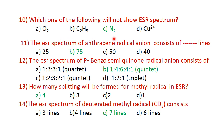The ESR spectra of anthracene radical anion consists of 75 lines. For the para-benzosemiquinone radical anion, the neighboring nuclei is 4, using the formula 2NI+1, where N=4 and I=1/2, you get 5 lines. Answer B is correct. Option B is correct.